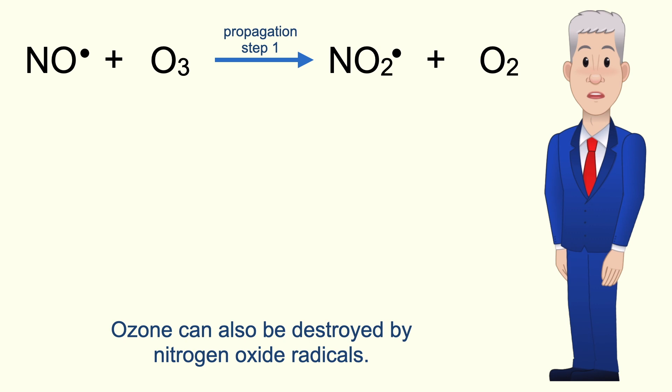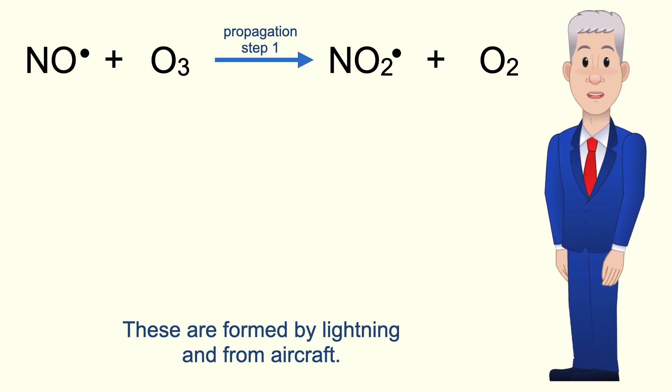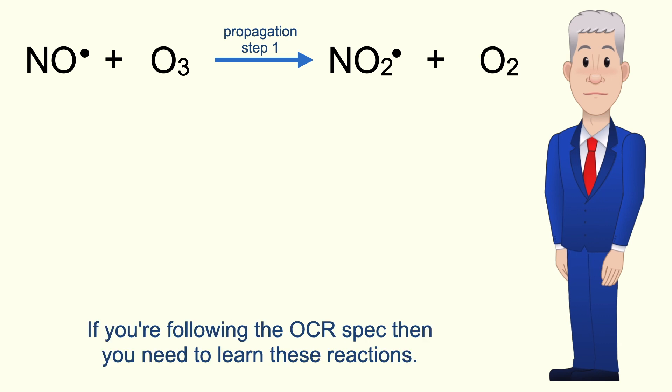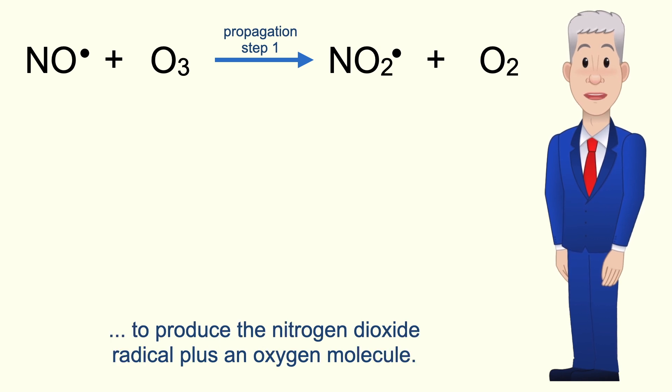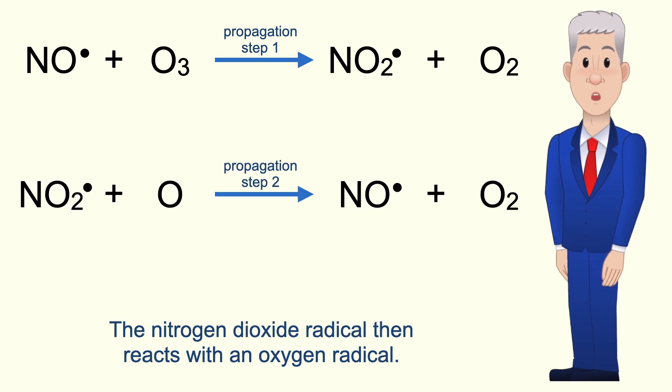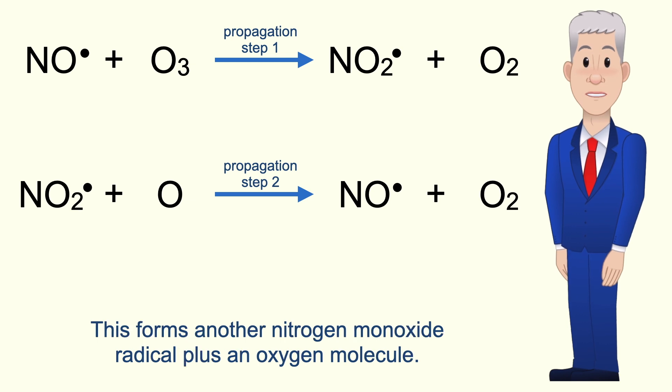Now ozone can also be destroyed by nitrogen oxide radicals. These are formed by lightning and from aircraft. And if you're following the OCR spec, then you need to learn these reactions. The nitrogen monoxide radical reacts with ozone to produce the nitrogen dioxide radical plus an oxygen molecule. The nitrogen dioxide radical then reacts with an oxygen radical. This forms another nitrogen monoxide radical plus an oxygen molecule.